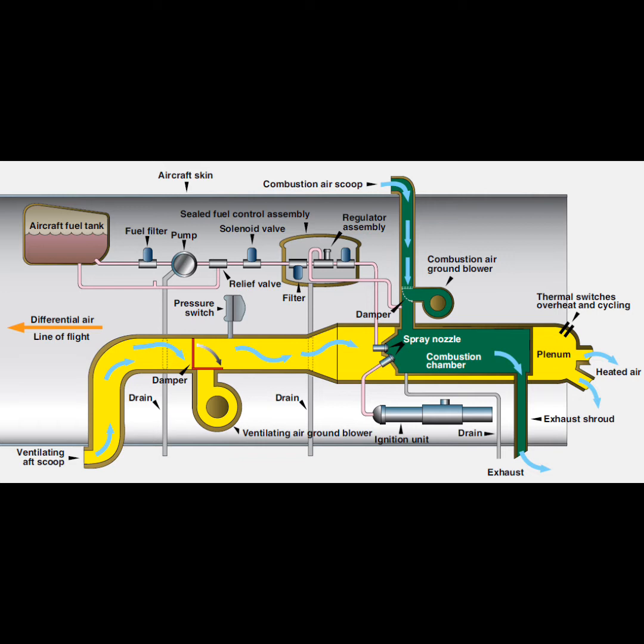Where does the warm air for cabin heating come from in most small reciprocating engine aircraft? Shroud around engine muffler. What are the three methods of supplying heat to the conditioned air when the heat of compression is not significant for this purpose? Combustion heaters, electric heaters, and exhaust gas heat exchangers.